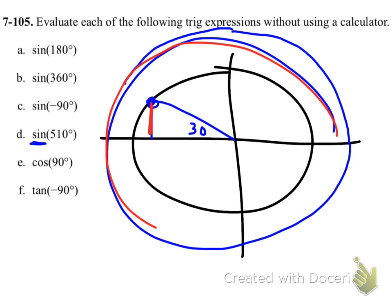So I went around a full unit circle plus the rest of it to get to 510, which leaves me now with basically the same thing as 150 degree angle. So my height for that is going to be one half, because the height for a 30 degree triangle is one half.